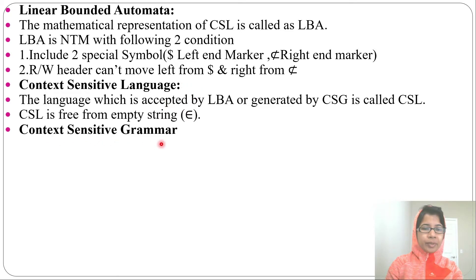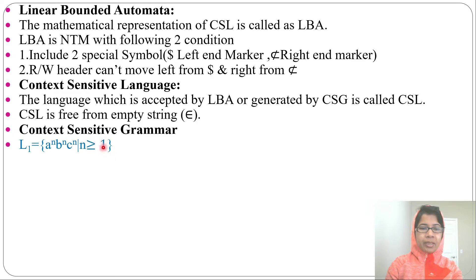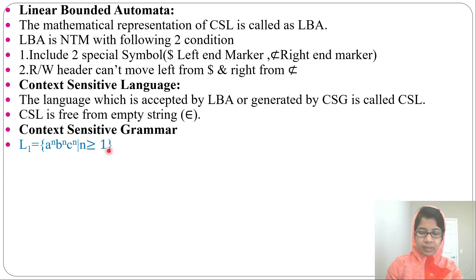Let's see one example of context-sensitive grammar. The language is a^n b^n c^n, where n ≥ 1. If n were greater than or equal to 0, this would not be a context-sensitive language — it would be a recursively enumerable language, since context-sensitive language does not accept epsilon. Only when n ≥ 1 is it a context-sensitive language. Let's write the grammar for this.